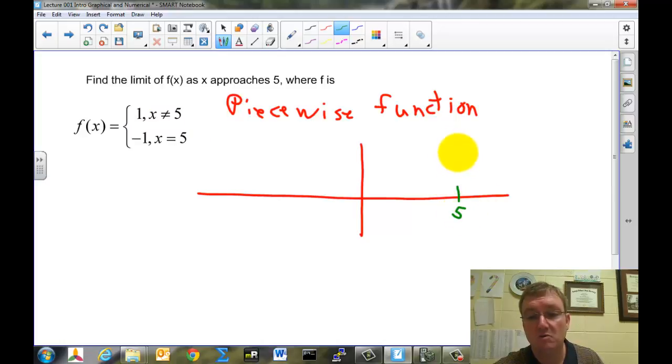So let's find, this is our number 5. And we're saying when it's not 5, then the function is the value 1 up here. So I'm going to do a circle because we don't know what's happening there yet. And the function should look like this.